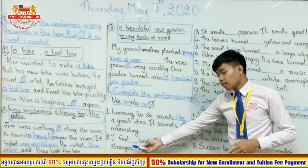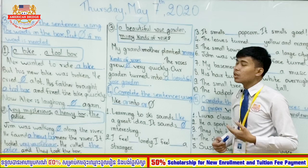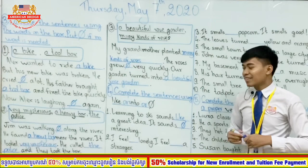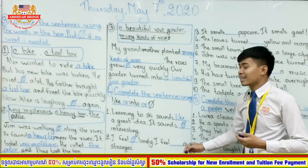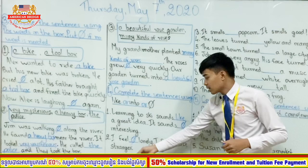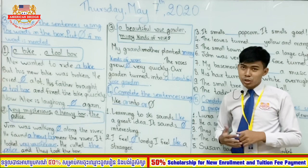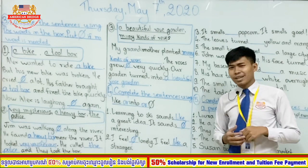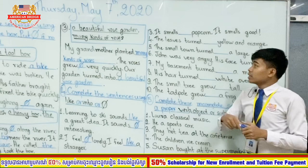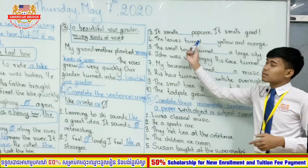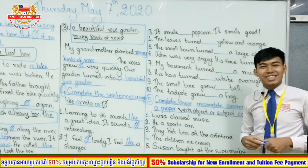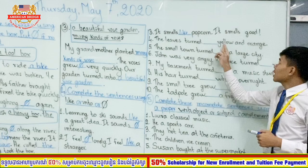Number 2: I feel lonely — no word needed, 'none.' I feel like a stranger. A stranger is a person you don't know. Number 3: It smells like popcorn. It smells good — no word needed.